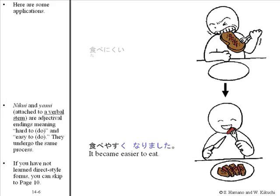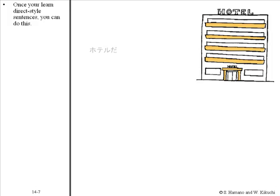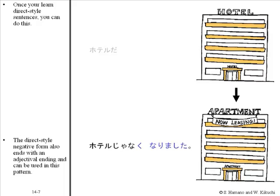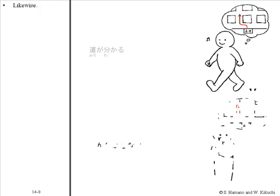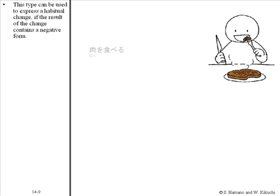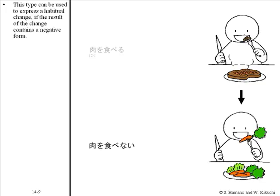If you have not learned direct style forms, you can skip to page 10. Once you learn direct style sentences, you can apply them here. The direct style negative form also ends with an adjectival ending and can be used in this pattern. This type can be used to express a habitual change if the result of the change contains a negative form. For example: 肉を食べなくなりました.